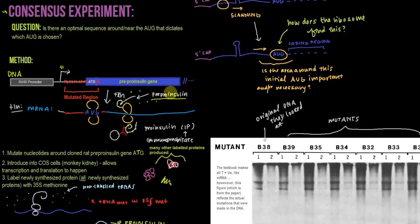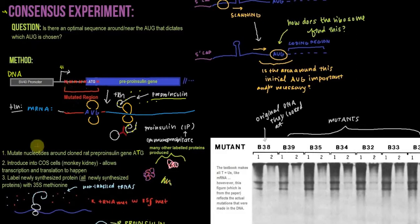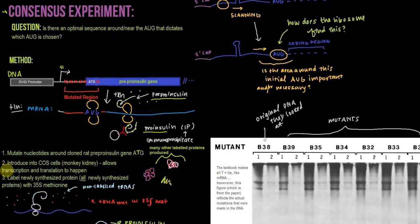Pre-proinsulin actually gets cleaved into a product called proinsulin, which we're then going to immunoprecipitate. We create this construct and introduce it into COS cells — these are from monkey kidneys — which allows transcription and translation to happen. Ultimately what we're going to assay is the proinsulin protein being produced from this pre-proinsulin gene controlled by this ATG that has various mutations around it. Protein actually needs to be made, which requires transcription and translation to actually happen, which is why we put it in these COS cells.